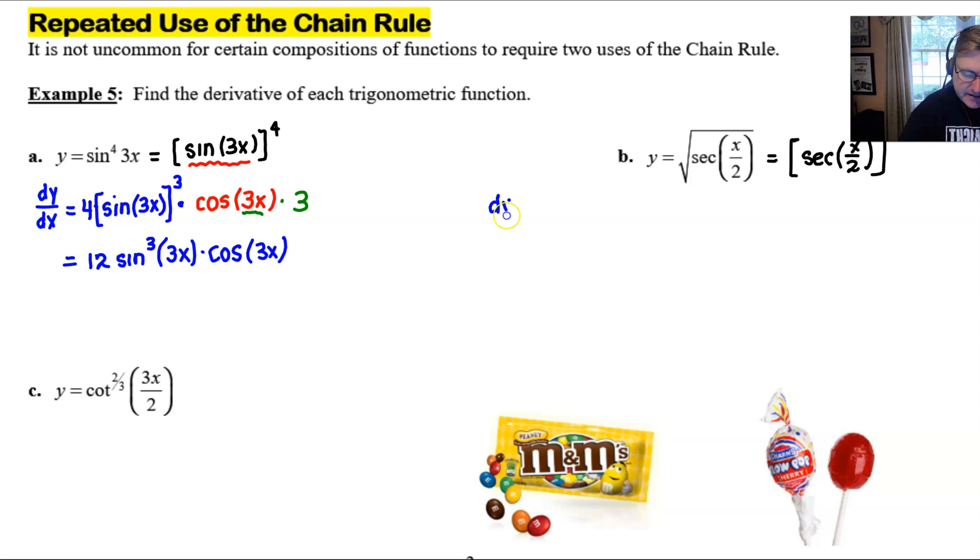When we take the derivative, we have to think about that first. We are taking the derivative of something to the 1/2 power. Well, that would of course give us 1/2 times the something, secant of x over 2, raised to one power less. Now we're going to have to break out our arithmetic knowledge of fractions and know that if we take 1/2 and subtract 1, we are going to have negative 1/2. But we're not finished yet because now we have to take the derivative of that something, the derivative of the secant of x over 2.